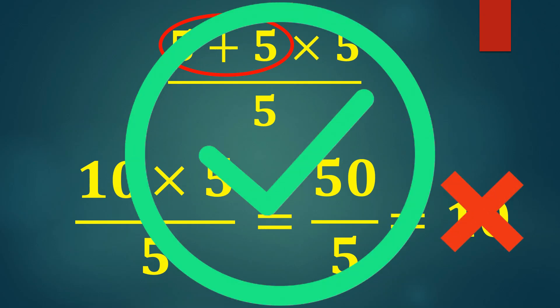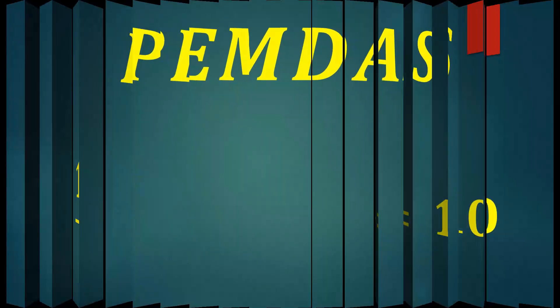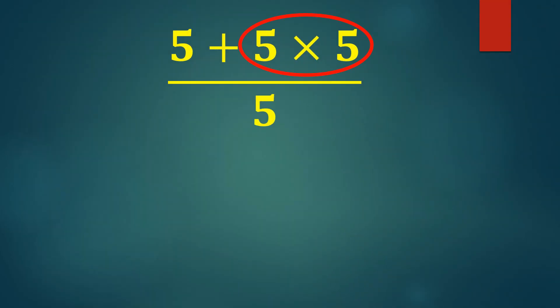Let's go through the right way, step by step. According to the PEMDAS rule, the order of operations, we need to do multiplication before addition. So, 5 times 5 equals 25.